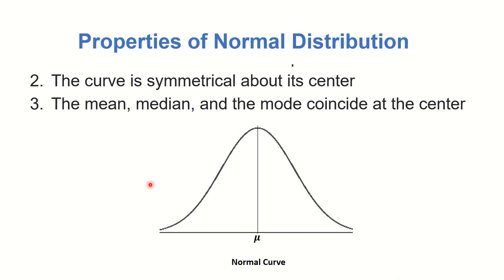The third property is that the mean, the median, and the mode coincide at the center. When we say normal distribution, the mean is the same as the median and the mode — they have the same value and are all found at the center. Otherwise, it is not a normal distribution. For example, if the value of the mean is higher than the value of the median, it is no longer a normal distribution because the mean will not lie at the same point where the median is found.